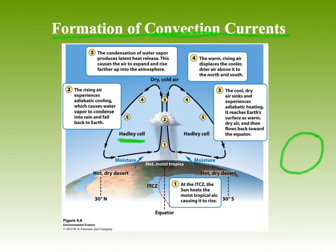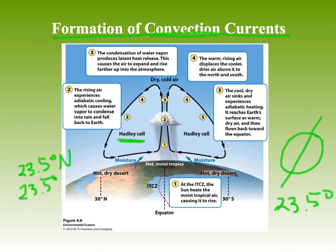The Earth is on an axis tilted at 23.5 degrees, so depending on its position around the sun, sunlight is going to hit directly between 23.5 degrees north and 23.5 degrees south in latitude. That's the dotted line you see right here. That's called the ITCZ, or the Intertropical Convergence Zone. The sun is going to be hitting most directly on that dotted line at different times of year.